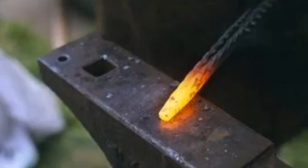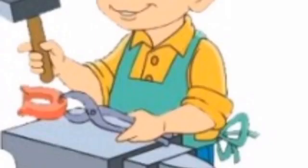What happens when a blacksmith hammers a red hot piece of iron? When a blacksmith hammers a red hot piece of iron, it changes its shape. From the above examples, it is understood that force is necessary to change the shape of an object.